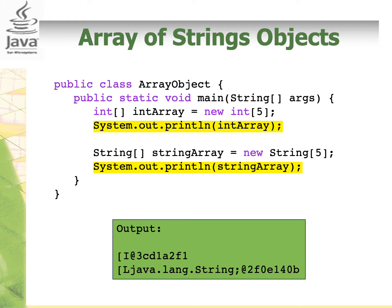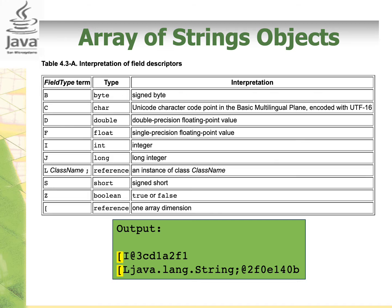What does this output mean? You can refer to the JVM specification to know more about it. From this output, the square bracket highlighted in yellow means it is the reference to a one-dimensional array. 'I' means that this is an integer, which is what the first output is — an array of int. The rest of it is the address where the integers are stored in the memory. 'Ljava.lang.String' is the instance of the String class, and the numbers after that are the address of the string objects stored in the memory.